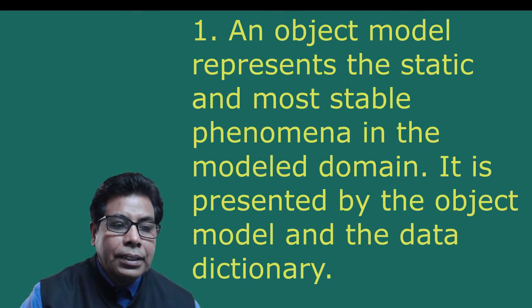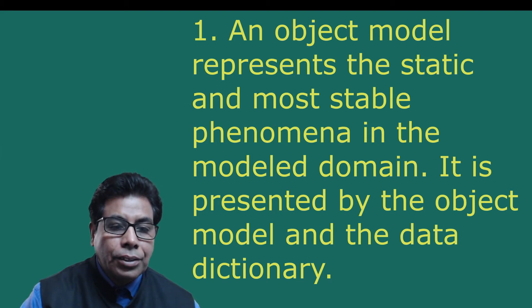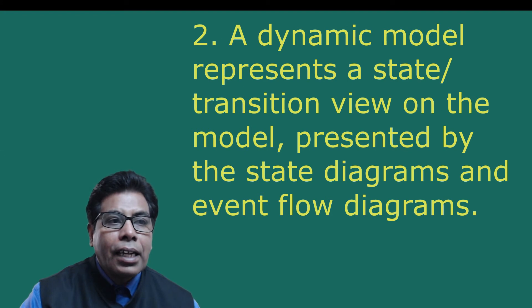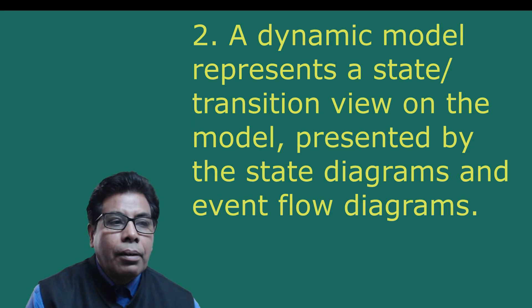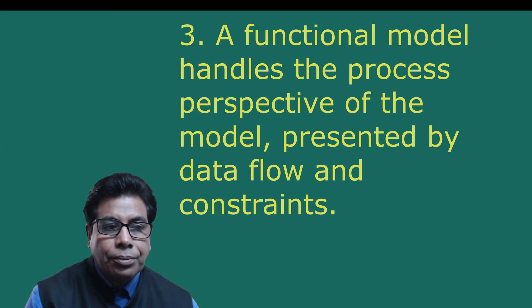OMT separates modeling into three different parts. First is the object model, which represents the static and most stable phenomena in the model domain — it is presented by the object model and the data dictionary. Second is the dynamic model, which represents a state transition view on the model, presented by state diagrams and event flow diagrams. Third is the functional model, which handles the process perspective, presented by data flow diagrams and constraints.